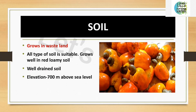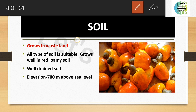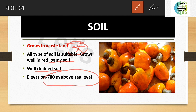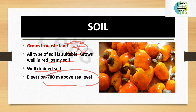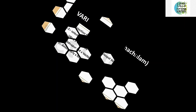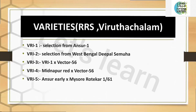Now we'll see the suitable soil for cashew. This is an important topic — cashew can be grown in wasteland, and all types of soil are suitable. It grows well in red loamy, well-drained soil and can even be grown up to an elevation of 700 metres above sea level.